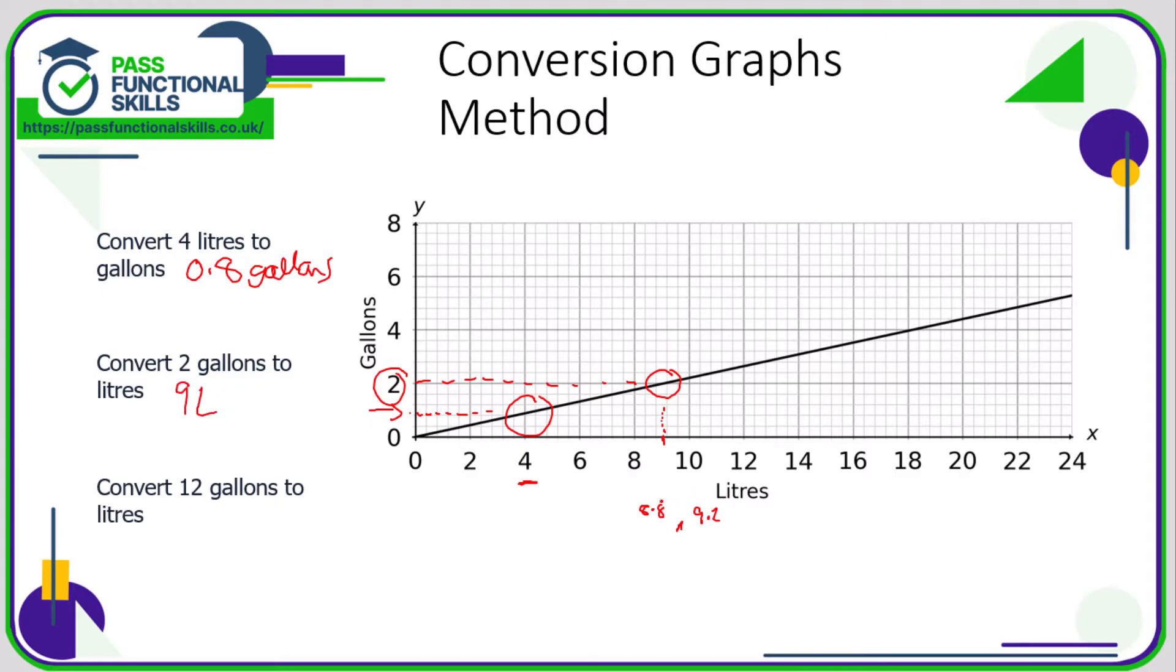Now we want to convert 12 gallons to liters, but the problem is gallons only goes up to eight. In fact, the actual line doesn't even go up to six, but we do know from a previous question that two gallons is nine liters.